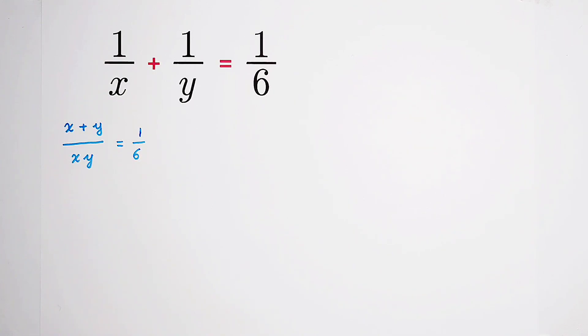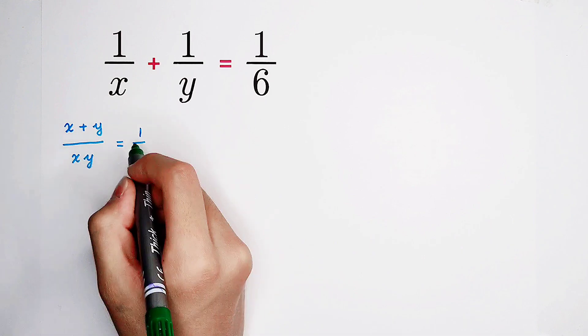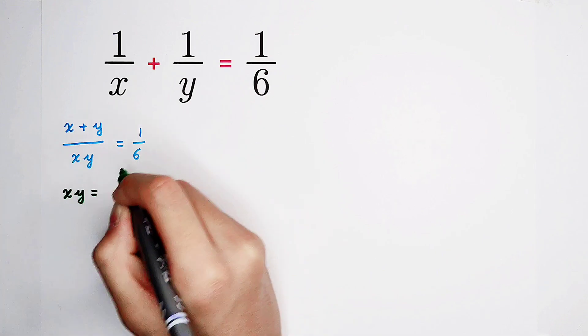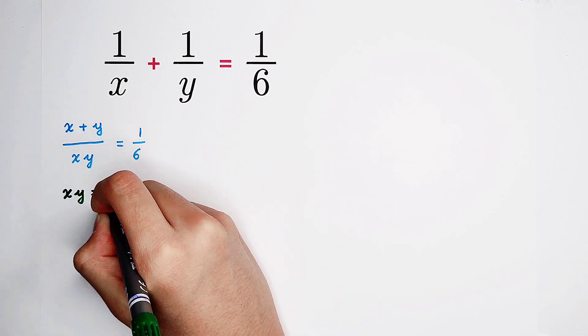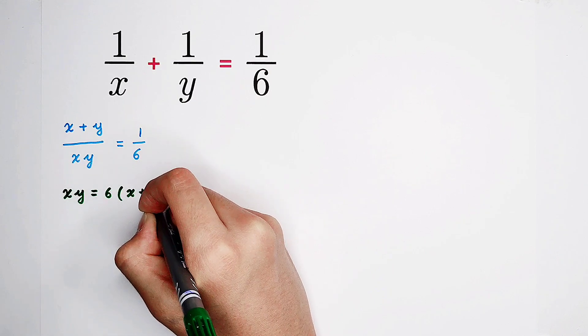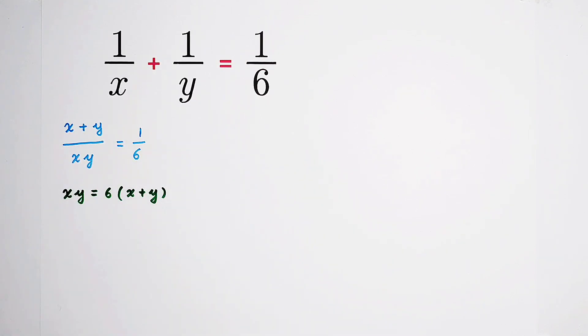So now, what we're gonna do is cross-multiply. xy times 1 is xy equals 6 times the sum of x and y. Very good.